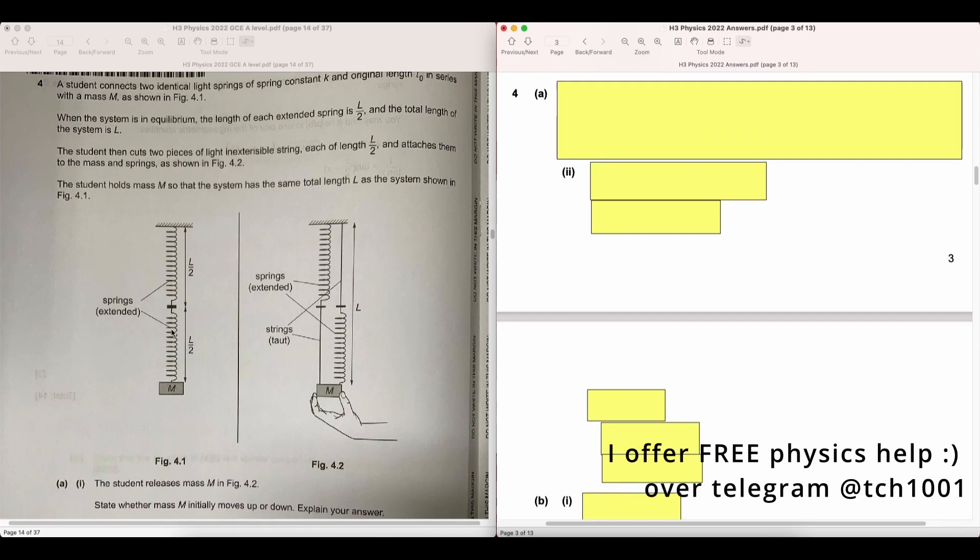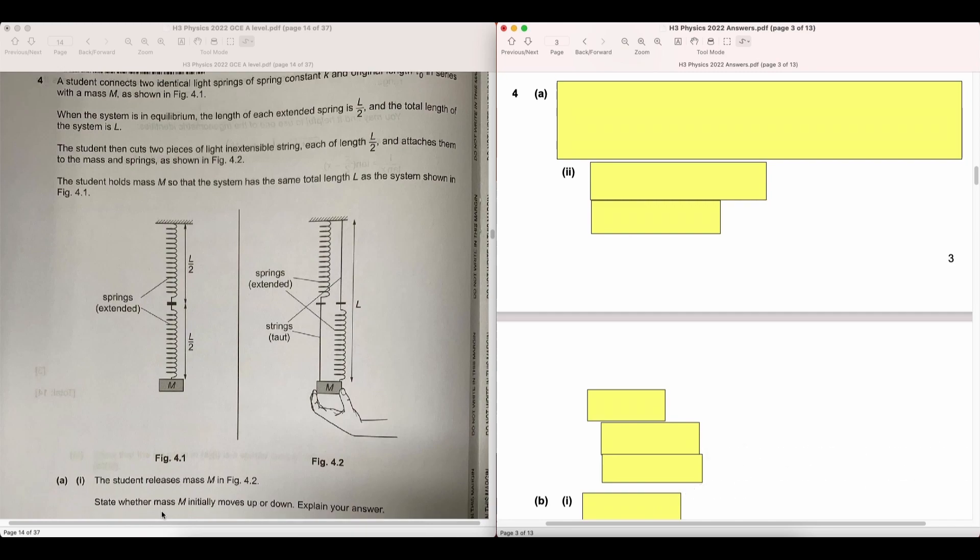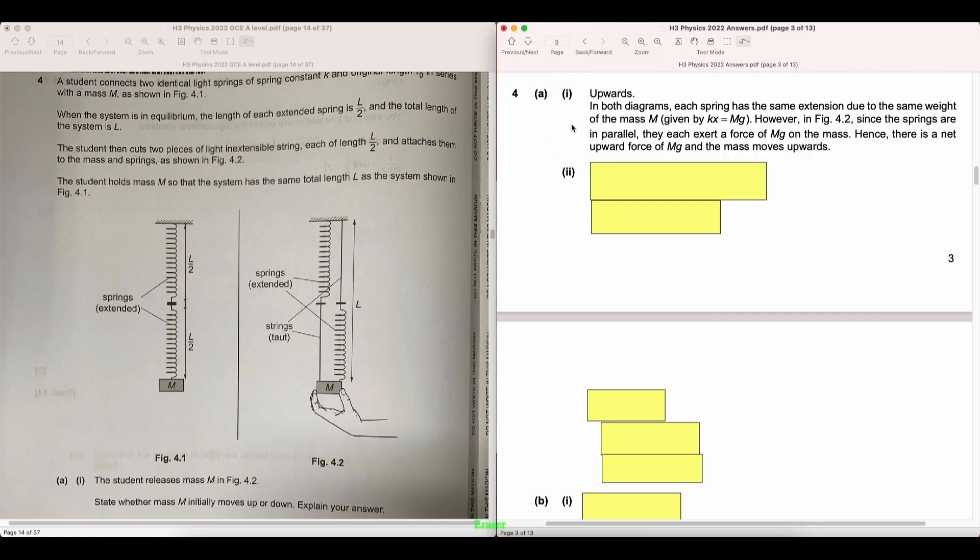One is where you connect the springs in series, and one is when you connect them in parallel. So the question asks, what happens when we release the mass M, whether it moves up or down? So the answer is it moves upwards.